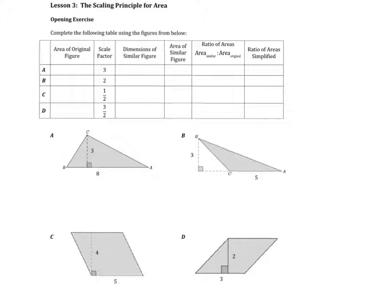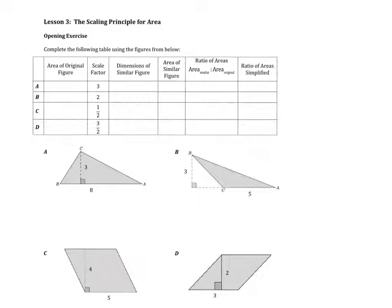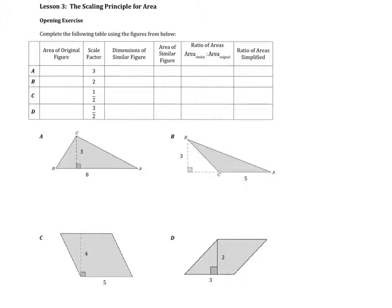A is a triangle, and I know that the area formula for a triangle is 1 half base times height. I have the base 8 and the height 3. So area of a triangle is base times height, so 8 times 3 divided in half, that's equal to 24 divided by 2, which is 12. I'm going to copy that right up here in the table.